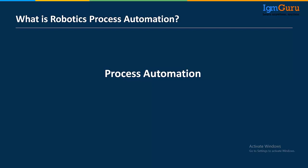Process automation was there before, so what is RPA? One word is added before process automation — 'robotics.' This robot can work on your process automation tools instead of a human. RPA does not replace the target application or process automation tools like mainframe, CRM, or Salesforce — it just replaces the human who is working on them.